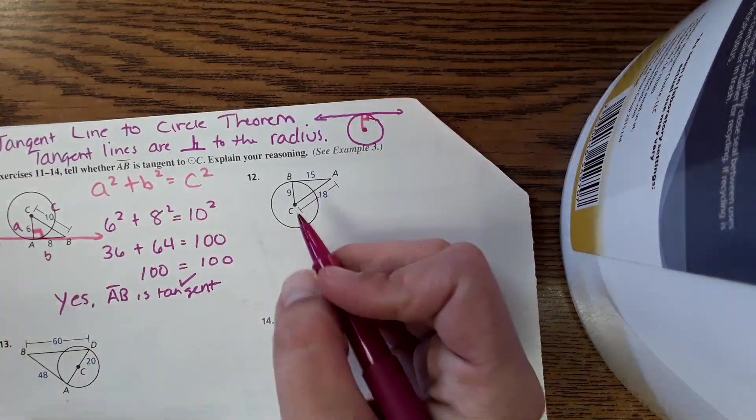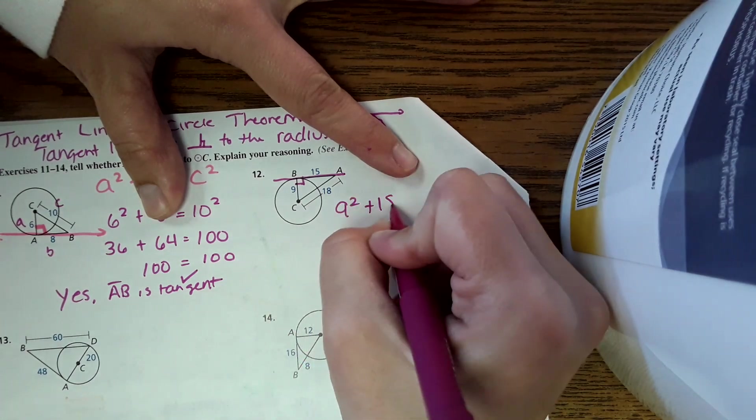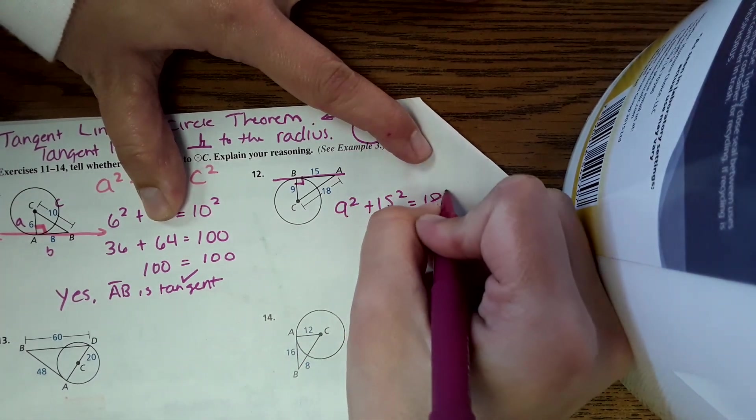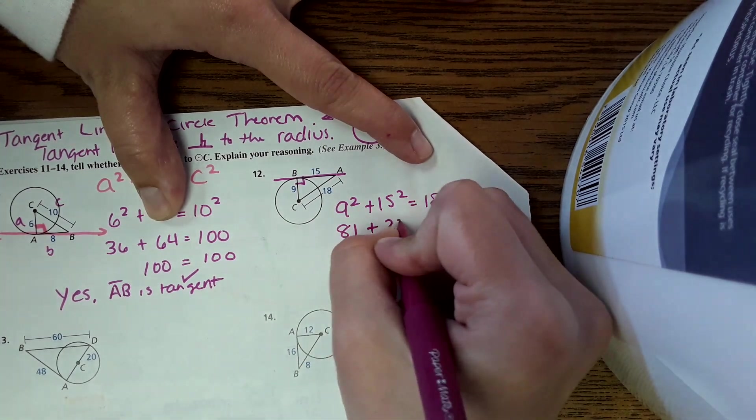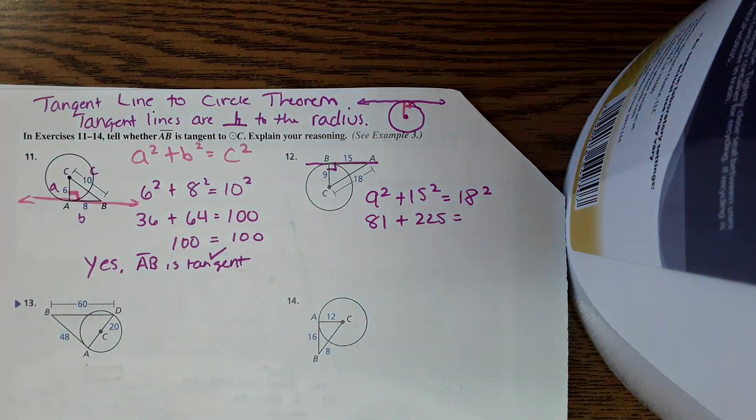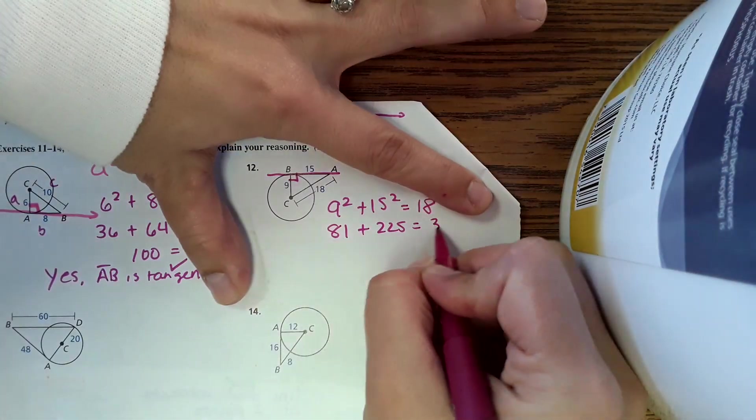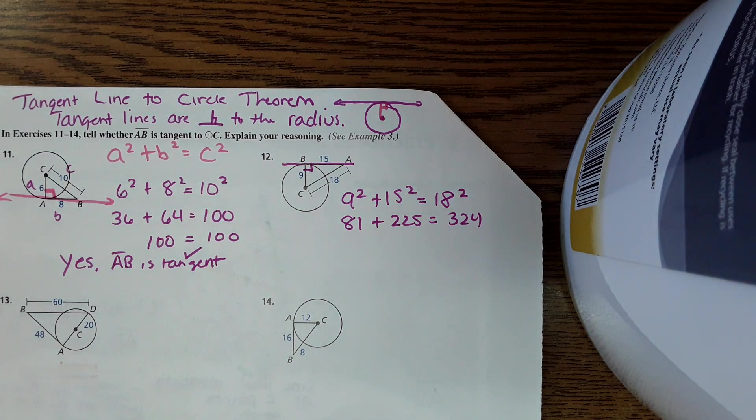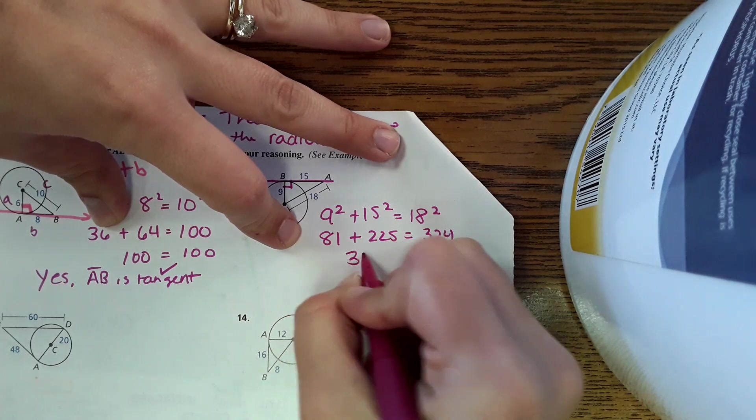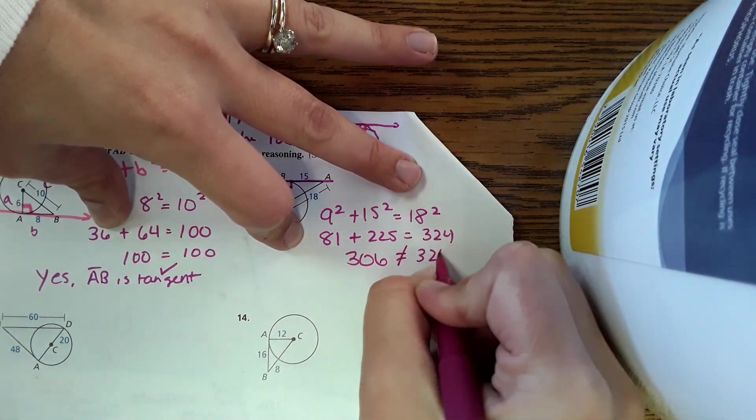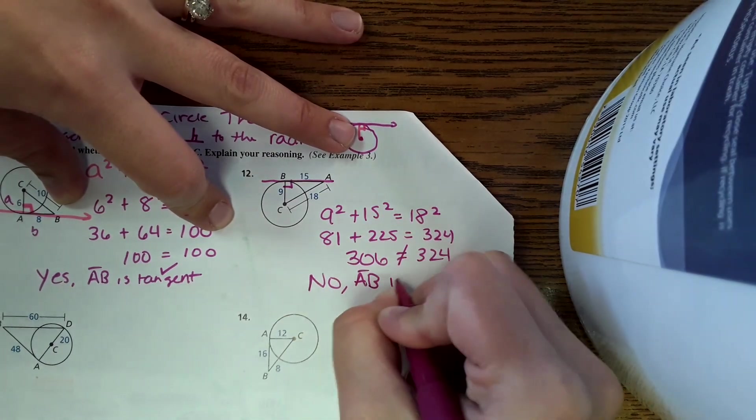Number 12, same kind of problem. It wants to know if AB is indeed tangent. So if we can do 9 squared plus 15 squared, and if that equals 18 squared, then it is a tangent line. So 81 plus 225 actually equals 306. That does not equal 324. So therefore, no, AB is not tangent.